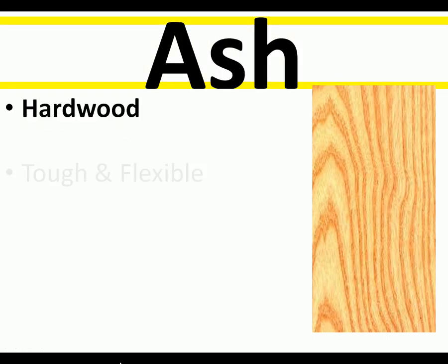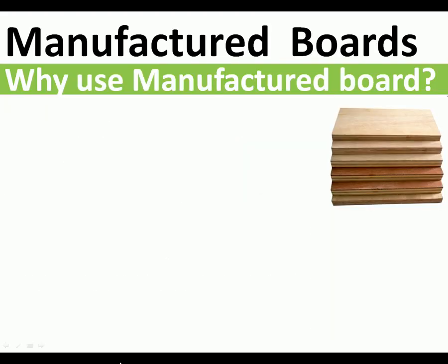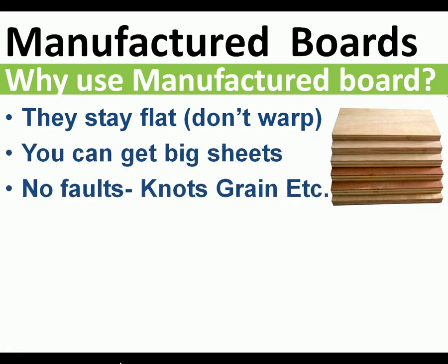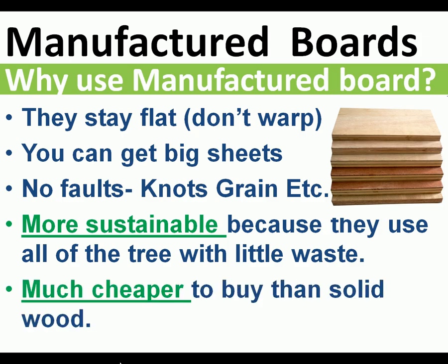Ash is another hardwood — tough and flexible with good elasticity, light brown, and used to make quality furniture. For the exam, learn pine as your softwood and a couple of hardwoods — that should be enough. Moving on to manufactured boards: the advantages over natural wood are that they stay flat, don't warp, come in big sheets with no faults, no grain, no knots. They're more sustainable as they use faster-growing trees with very little waste, and they're cheaper to buy than solid wood.